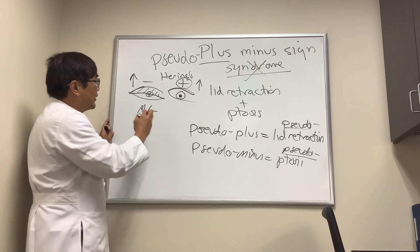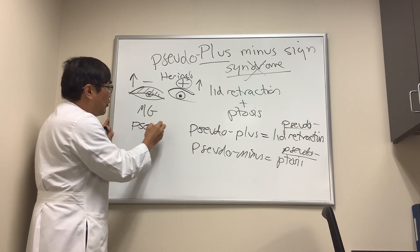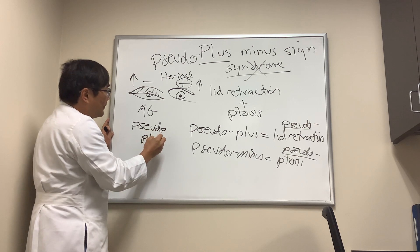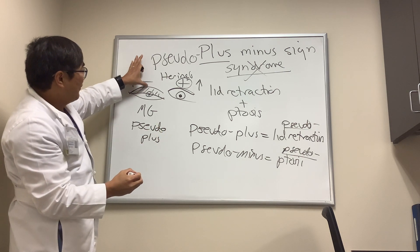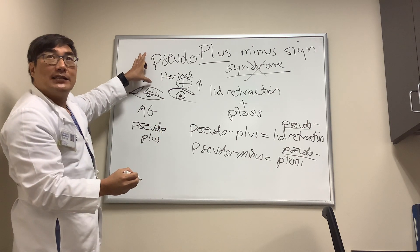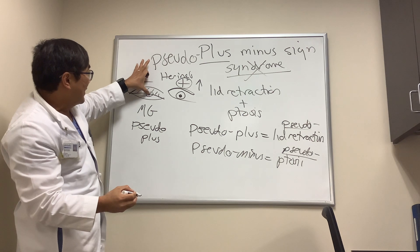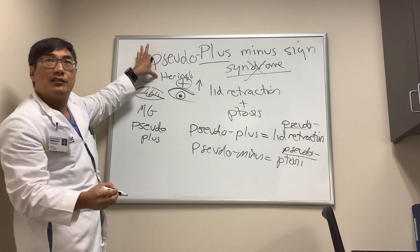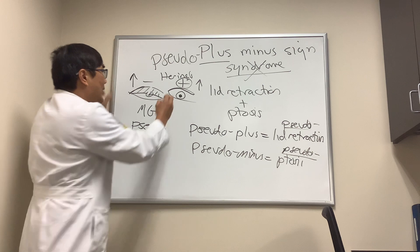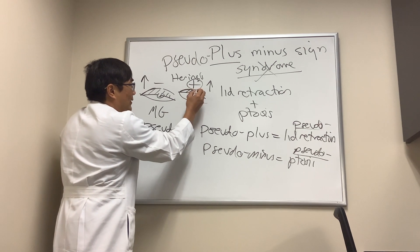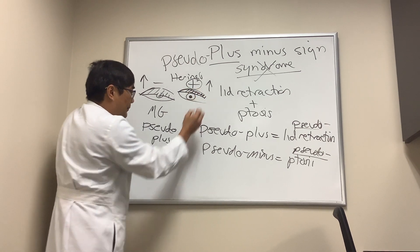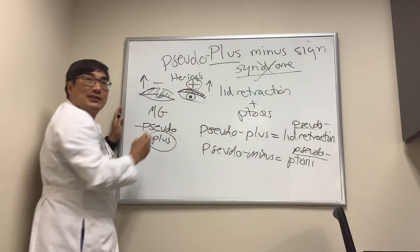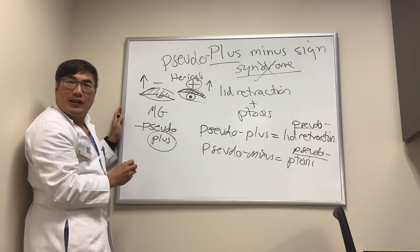So if you have a pseudo retraction — a pseudo plus — we can make that go away by lifting up the ptotic eyelid. Lifting the ptotic lid will alleviate the Hering's law innervation to the other eye, and the lid will go back down to a normal position. That proves that the pseudo side is the plus side, the retracted side.